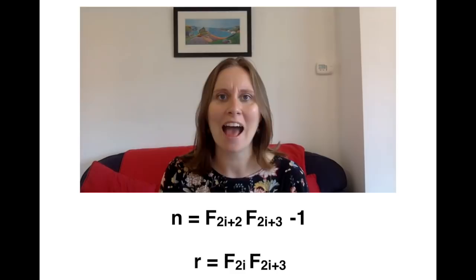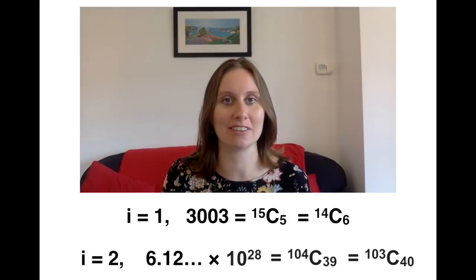And of that infinite number of solutions, my favourite mega number is just the second. So we get this number when i is two, and when i is one, we get three thousand and three.